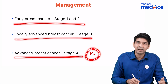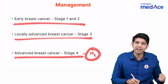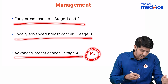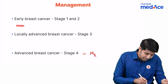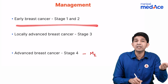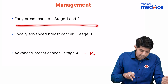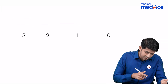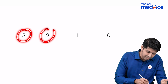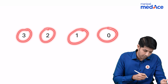Any patient with metastatic disease you're going to put directly as advanced cancer. Now that makes our job easy. We need to differentiate between early and locally advanced. How do we do that? That is with the help of the mnemonic 3-2-1-0.